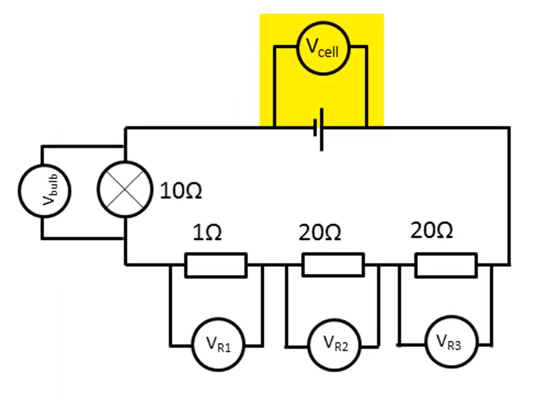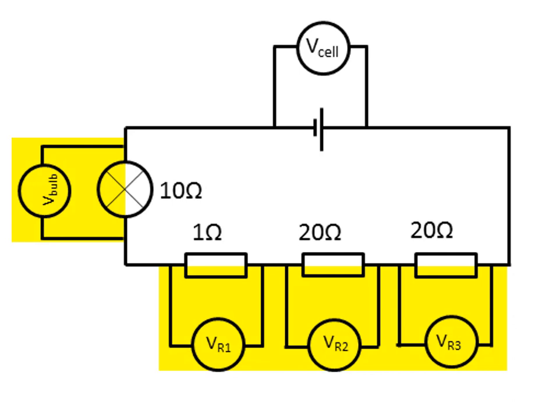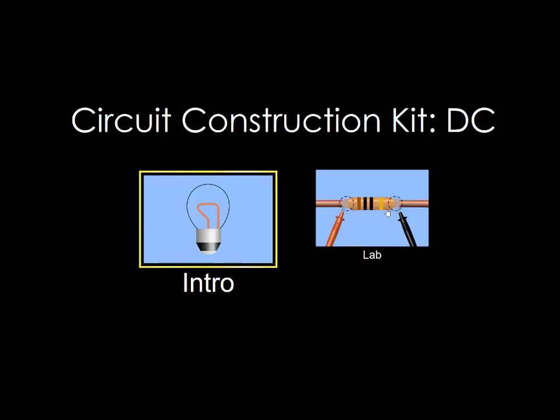We could call the voltage read across the battery 'voltage in', because that's the energy put into the circuit per coulomb of charge. And we could call the voltage across all the circuit elements — all the resistors, remembering a bulb is also a resistor — 'V out', because they tell us how much energy those components took out from each coulomb of charge out of the circuit.